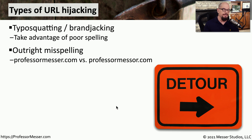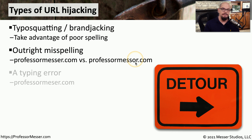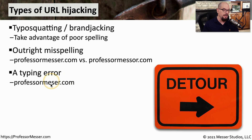Some of these might be very obvious. For example, the legitimate professormesser.com can be easily misspelled as professormessor.com with an O-R at the end. These look very similar to each other, but someone typing in the second URL may not be visiting a legitimate site. An attacker may also take advantage of people not spelling things properly — for instance, purchasing professormesser.com with one S instead of two.